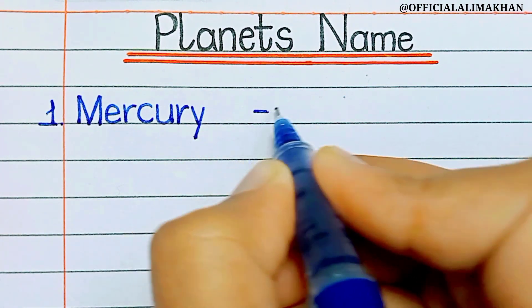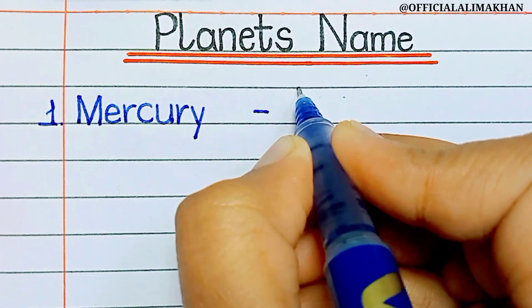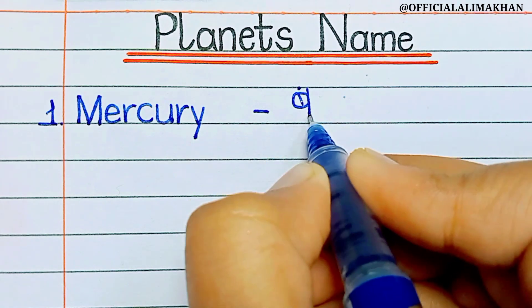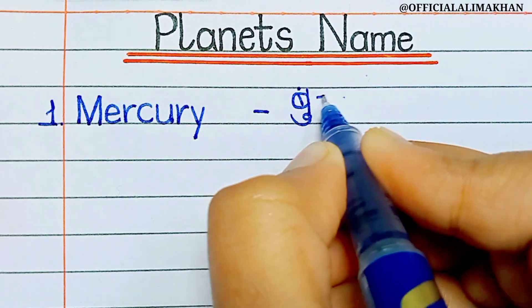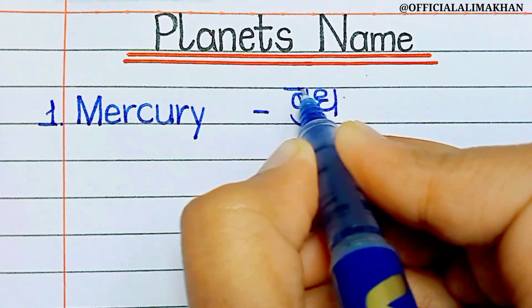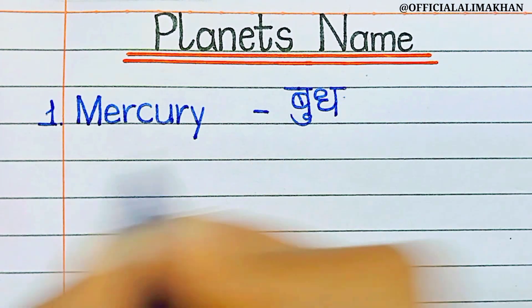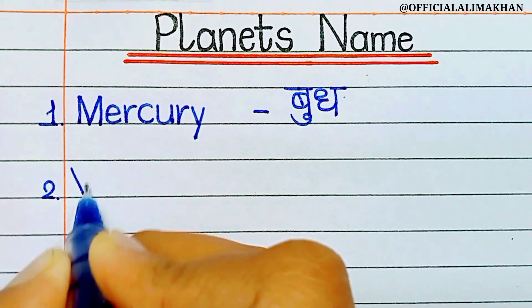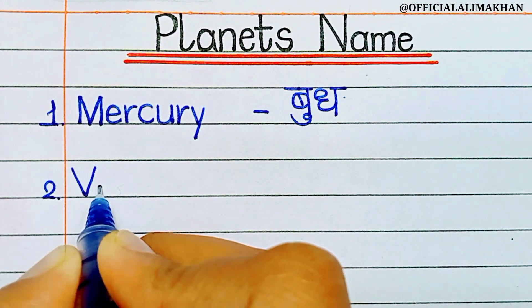Number one, Mercury. M-E-R-C-U-R-Y. Mercury means Budha.